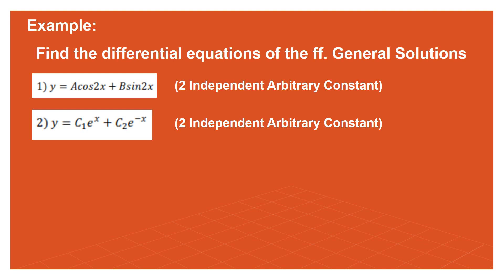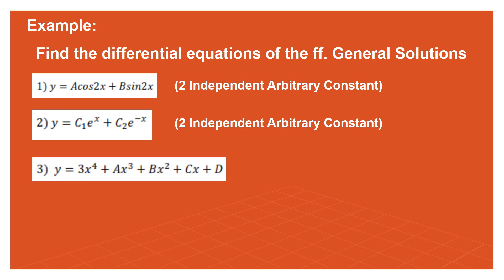Example number three: y = 3x⁴ + ax³ + bx² + cx + d. How many independent arbitrary constants are there? If you said 5, that is incorrect. The first term 3 is already a fixed constant with a specific value, so it does not count. We only have a, b, c, and d — four independent arbitrary constants.